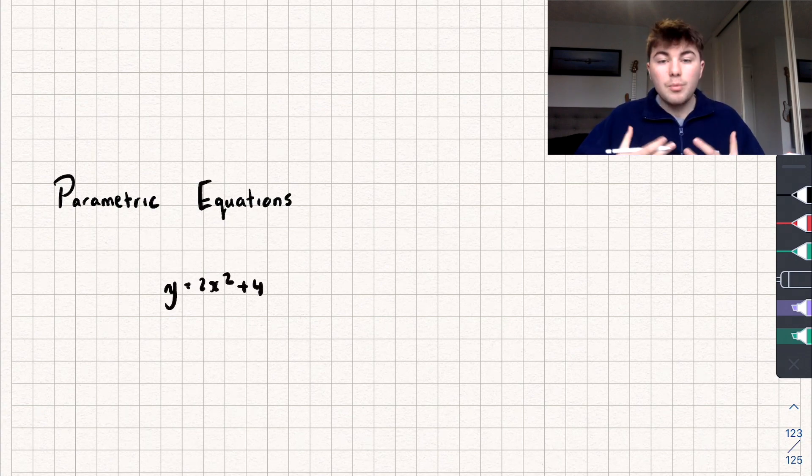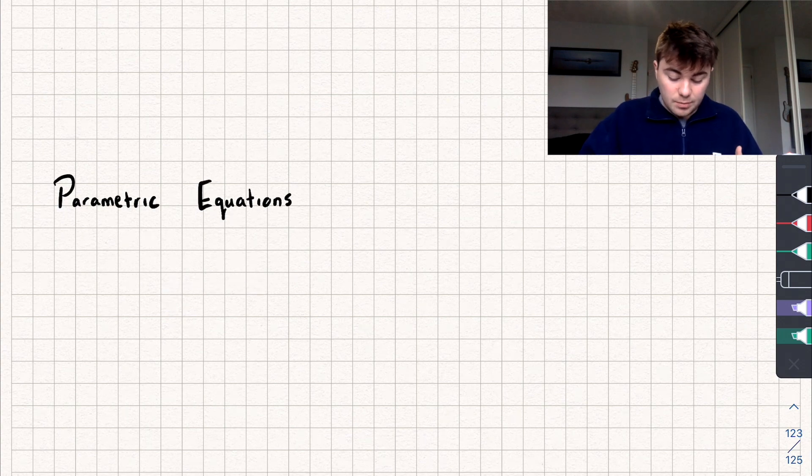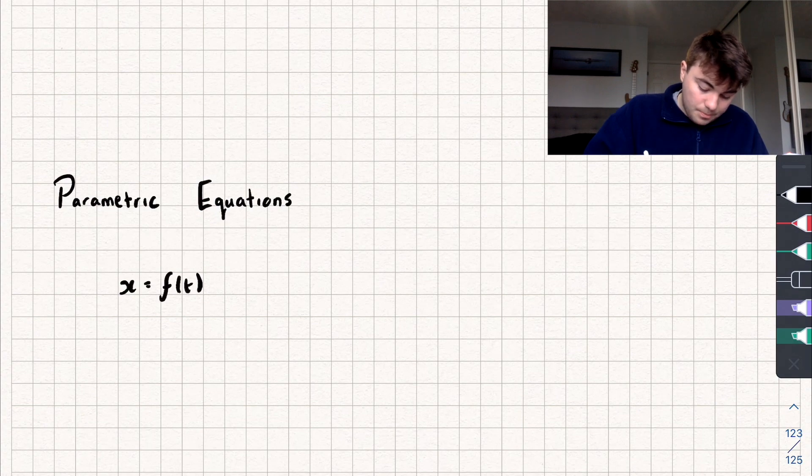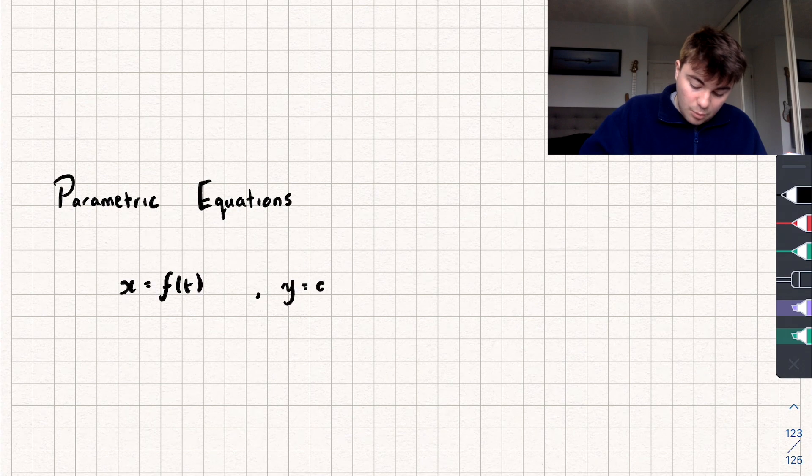When we're using parametric equations, we have two equations to describe one curve, at least in two dimensions. We'll have one describing what's happening to x, so we could say that x equals some function of t. And we'll have another equation describing what's happening to y, so y equals some other function g of t.